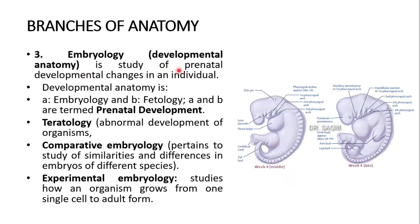The third branch is embryology, also known as developmental anatomy. It is the study of the prenatal developmental changes in an individual. Developmental anatomy includes: A — embryology, and B — fetology. A and B are termed prenatal development. Teratology is the abnormal development of organisms. Comparative embryology pertains to the study of similarities and differences in embryos of different species. Experimental embryology studies how an organism grows from a single cell to adult form.